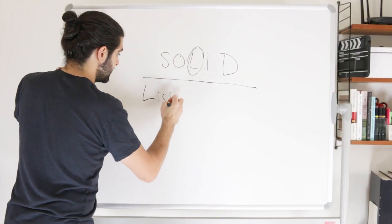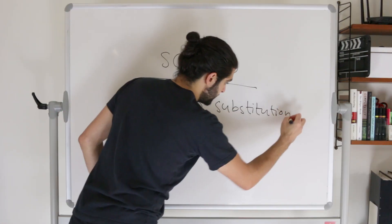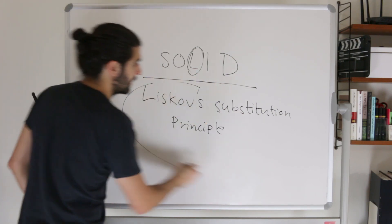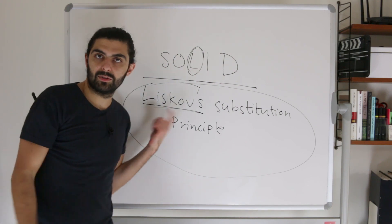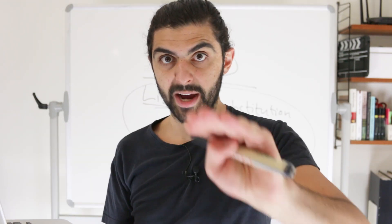So, the Liskov Substitution Principle. Let's read the definition from Wikipedia. 'Substitutability is a principle in object-oriented programming stating that if S is a subtype of T, then objects of type T may be replaced with objects of type S — in other words, an object of type T may be substituted with any object of subtype S — without altering any of the desirable properties of T, such as correctness or tasks performed.'